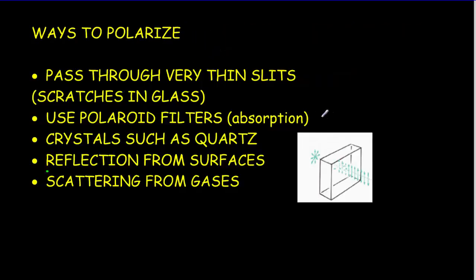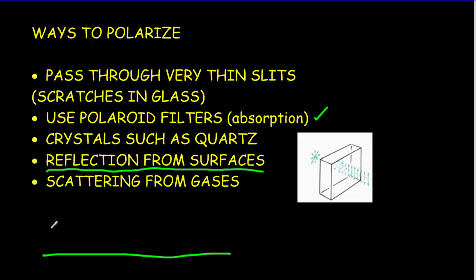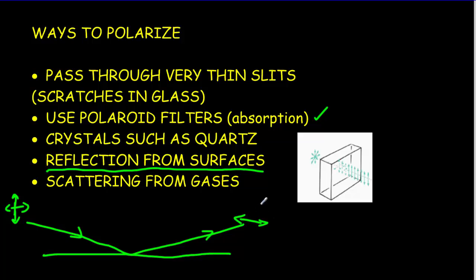There are other ways to polarize light besides polaroid filters. Reflection from surfaces is one — at a lake near sunset, light comes in at a glancing angle and reflects up as horizontally polarized light. That's why polarized sunglasses use vertically polarized filters, to block that horizontally polarized glare. You can also polarize light by passing it through very thin slits, such as scratches in glass, as done in liquid crystal displays. Quartz can also polarize light, and scattering from certain gases produces polarized light as well.